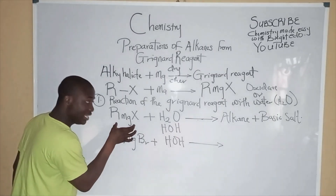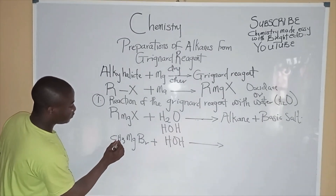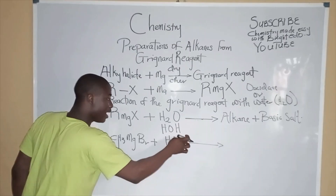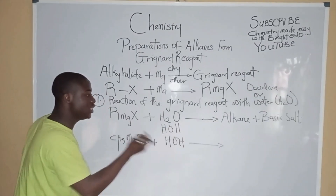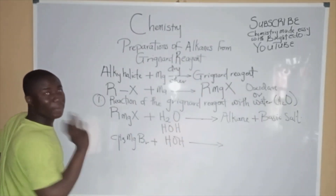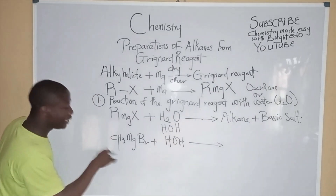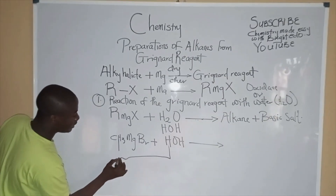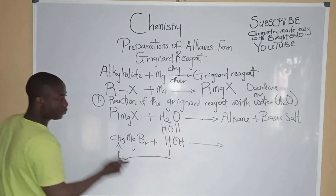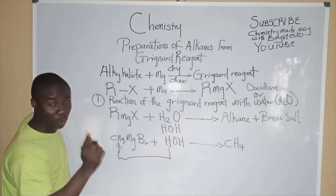Whenever the Grignard Reagent reacts with water, we get an alkane and a basic salt. Because the alkyl group is negatively charged and the hydrogen atom has a positive charge, one hydrogen atom from water combines with the alkyl group CH3 to give CH4. We get CH4 as our alkane, which is called methane — the first member of the alkane series, also called marsh gas or fire damp.